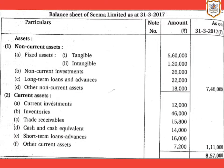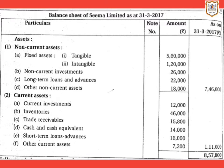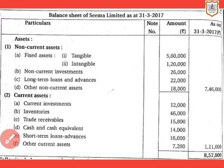The first item is current investments, which will be shown under the main head current assets. Current investments amount is rupees 12,000. Next is short-term loans and advances, shown under current assets, amount is rupees 16,000. Other current assets will also be shown under current assets, amount is 7,200.